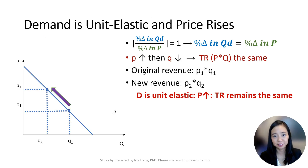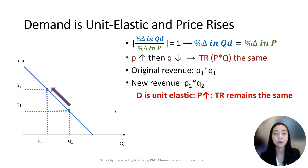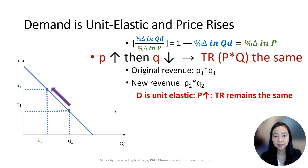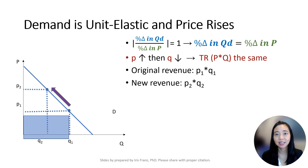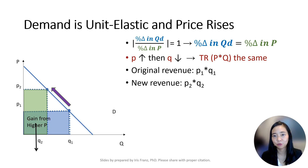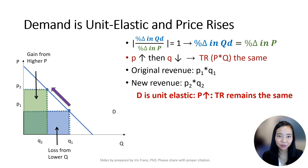Let's move on to unit elastic demand. When demand is unit elastic, the percentage change in quantity demanded is the same as the percentage change in price. When price goes up, quantity demanded drops in about the same magnitude. Therefore, total revenue remains the same. Draw an upward pointing arrow to indicate the increased price, and draw a downward pointing arrow about the same size to indicate the decreased quantity. As the arrows are about the same size, neither dominates, and total revenue remains the same. P1Q1, the blue rectangle, is the initial revenue, and P2Q2, the green rectangle, is the new revenue. We gain some revenue from a higher price and lose some from a lower quantity, but the gain and the loss are about the same size, so total revenue does not change.